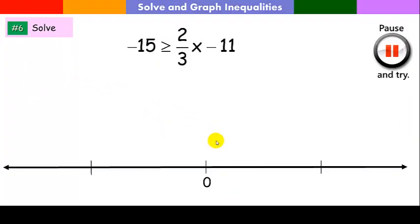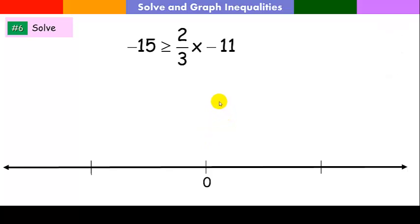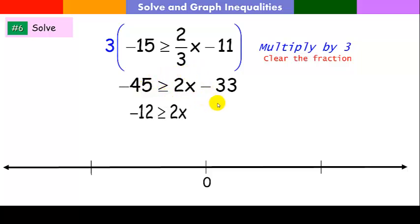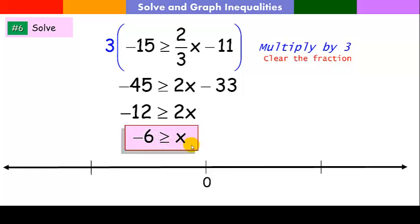For our last one, we're going to clear the fraction — I only have one denominator, this 3, so I multiply through by 3. When I do that I get to the simplified form. Add 33 to both sides, divide by 2. Notice at no point did I multiply or divide by a negative, so my sense of the inequality stays the same. All x's are less than or equal to negative 6 — that's my solution. My boundary point is at negative 6, it's filled in, and the arrow goes to the left. I hope you got all those — I'll see you in class tomorrow.